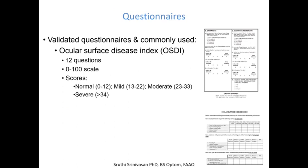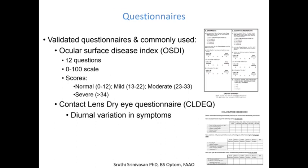Some of these questionnaires are very easy to administer. One is the OSDI questionnaire, a 12-item questionnaire with a formula to compute scores right away for normal, mild, moderate, and severe categories. For contact lens wearers, there is the Contact Lens Dry Eye Questionnaire, which captures the diurnal variation of symptoms in the morning, afternoon, and evening to see when symptoms peak. Questionnaires are the best way to go — they help you monitor your treatment and let you know if your patients are getting better symptomatically.